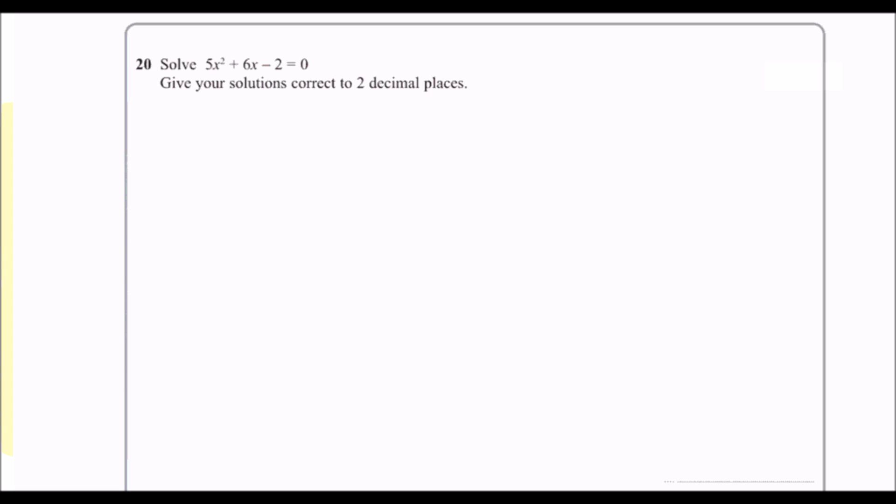Okay, so here we've got a question that says solve 5x squared plus 6x minus 2 equals 0. Give your solutions correct to two decimal places.